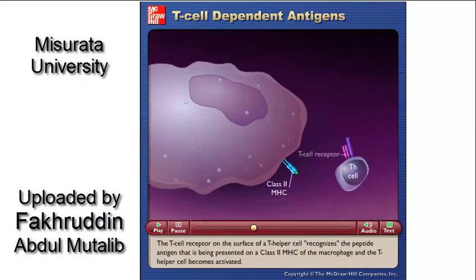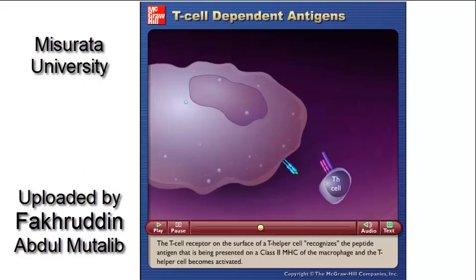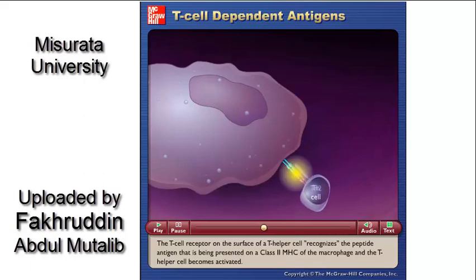The T cell receptor on the surface of a T helper cell recognizes the peptide antigen being presented on a class II MHC of the macrophage, and the T helper cell becomes activated.